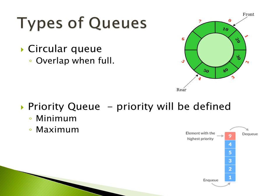We also have two types of priority queues: minimum and maximum. These priorities can be changed depending on the requirement. Data is inserted into the queue using the regular method, but when dequeuing, the element to be removed is selected based on its priority.